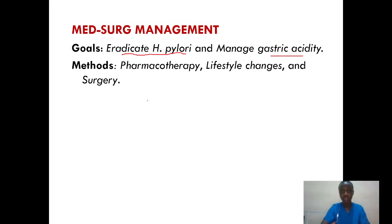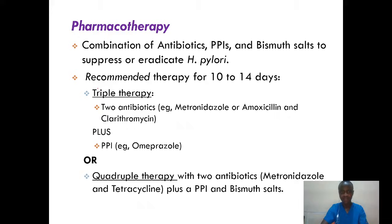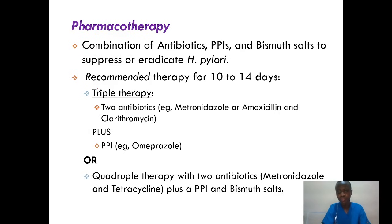Methods include pharmacotherapy, lifestyle changes, and surgery if refractory. For pharmacotherapy, we do a combination of antibiotics, PPIs, and other things to suppress or eradicate H. pylori. The recommended therapy is done for 10 to 14 days — triple therapy: two antibiotics, metronidazole or amoxicillin, and clarithromycin, then we add a PPI which can be omeprazole, esomeprazole, or others.